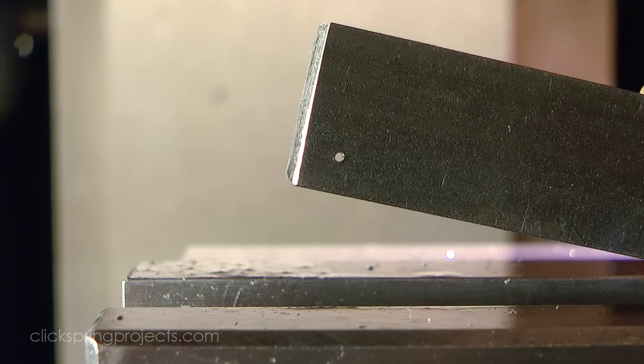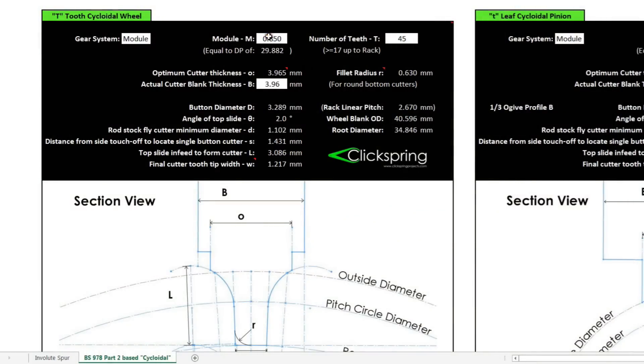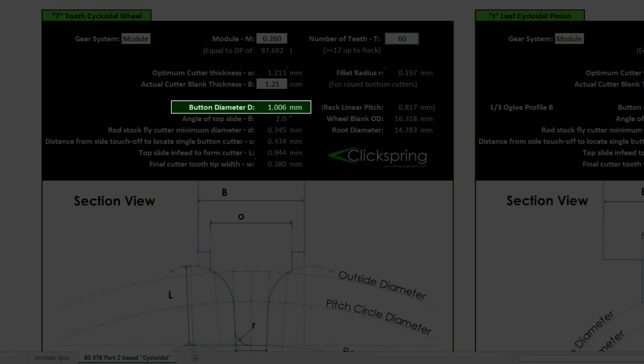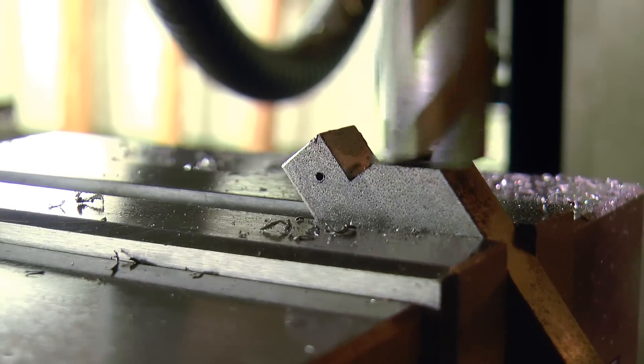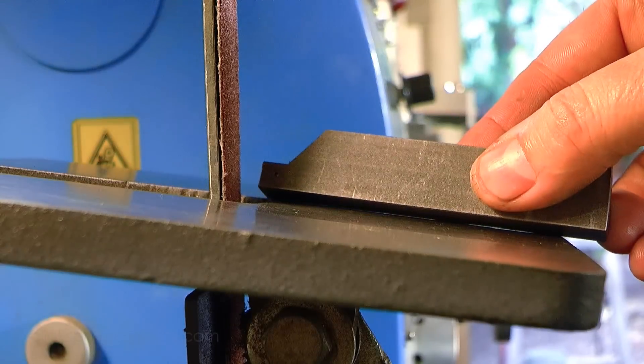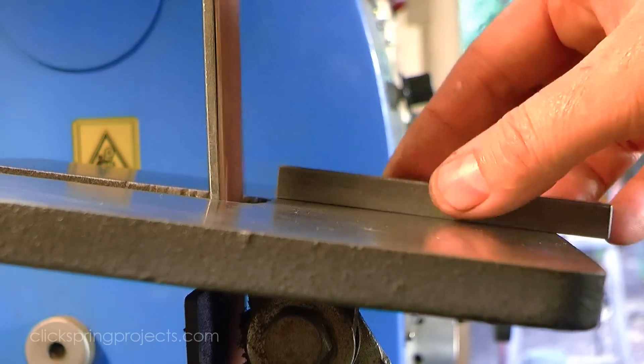Now as it happens, a 1mm diameter circle corresponds to a cycloidal wheel module of approximately 0.26, and serves as a good representation of the process at this end of the wheel cutter scale. Much of the process remains exactly the same as for the button cutters. There must be clearance to permit unobstructed access to the blank, as well as relief to permit a clean cutting action, all of which can be achieved by appropriate shaping of the cutter shank and the cutting end of the drill rod.